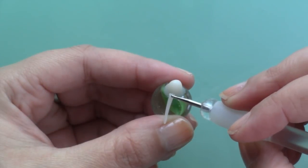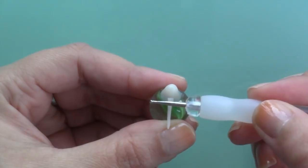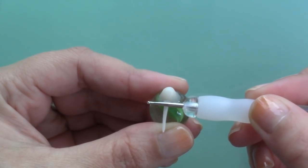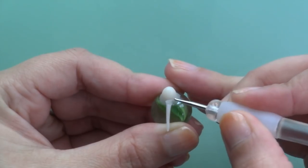One by one you want to attach and blend the tentacles to the body. I used both a dotting tool and a silicone tool to blend and smooth the clay down.